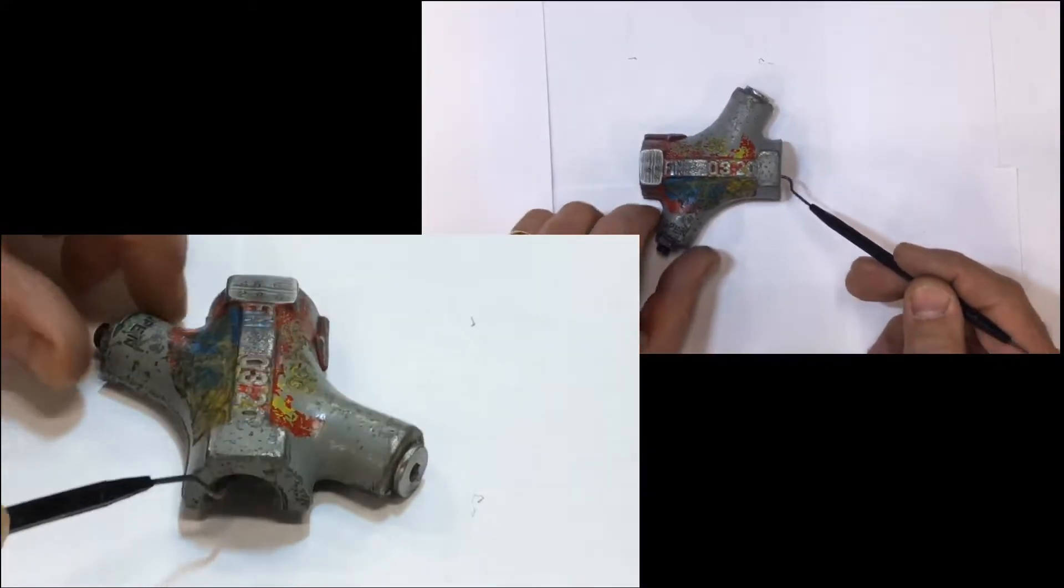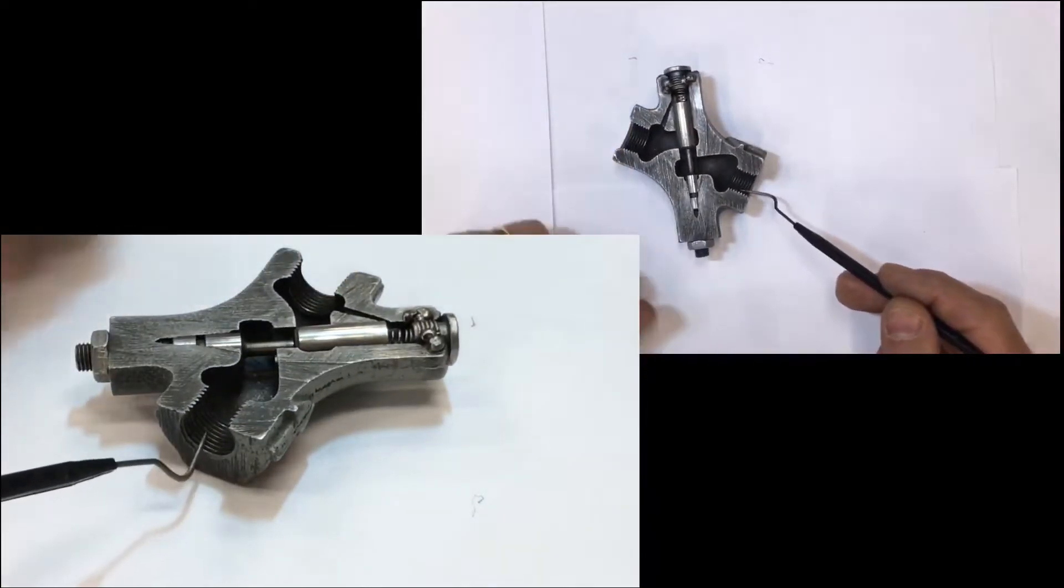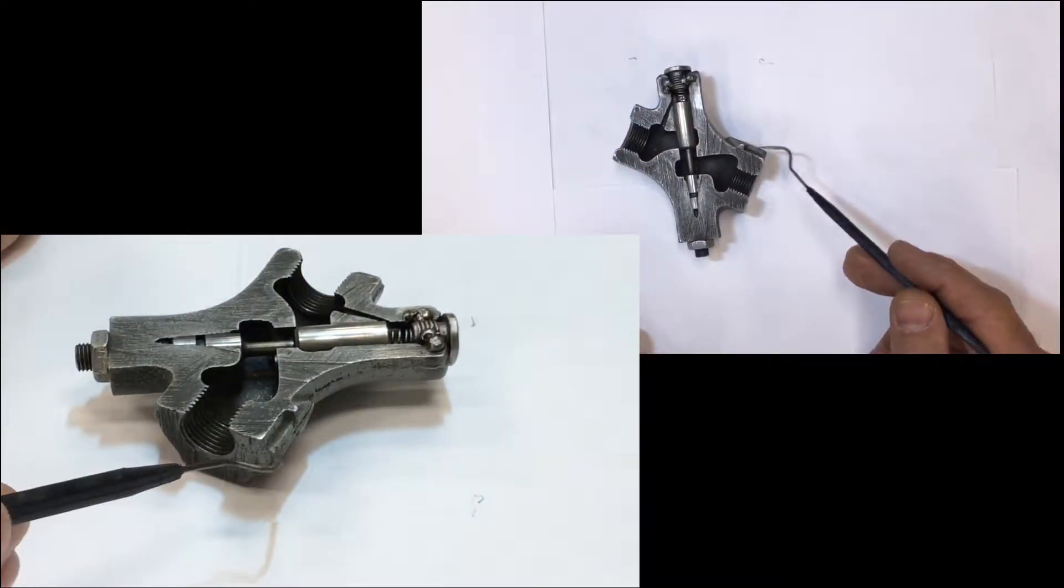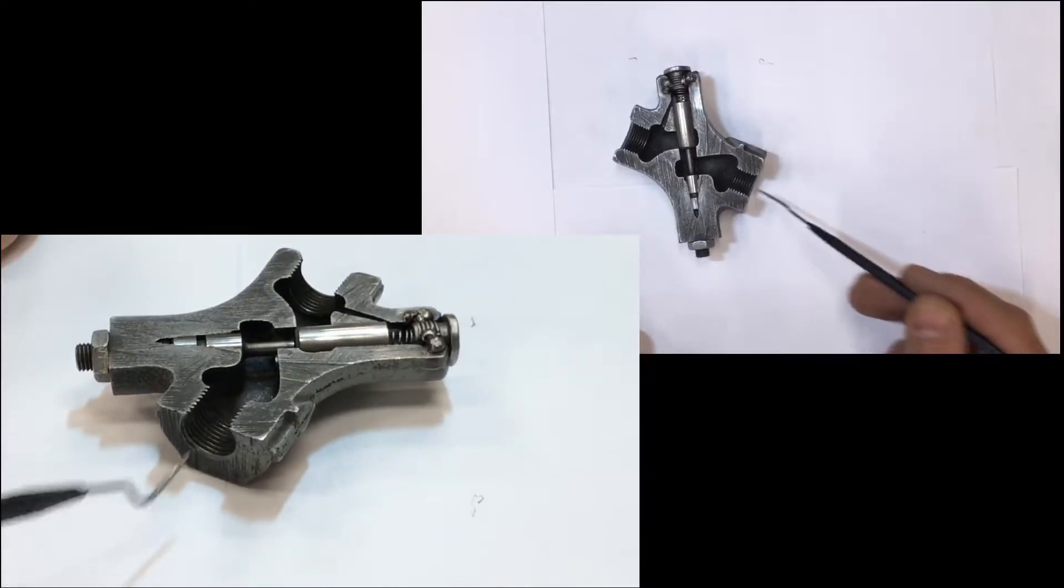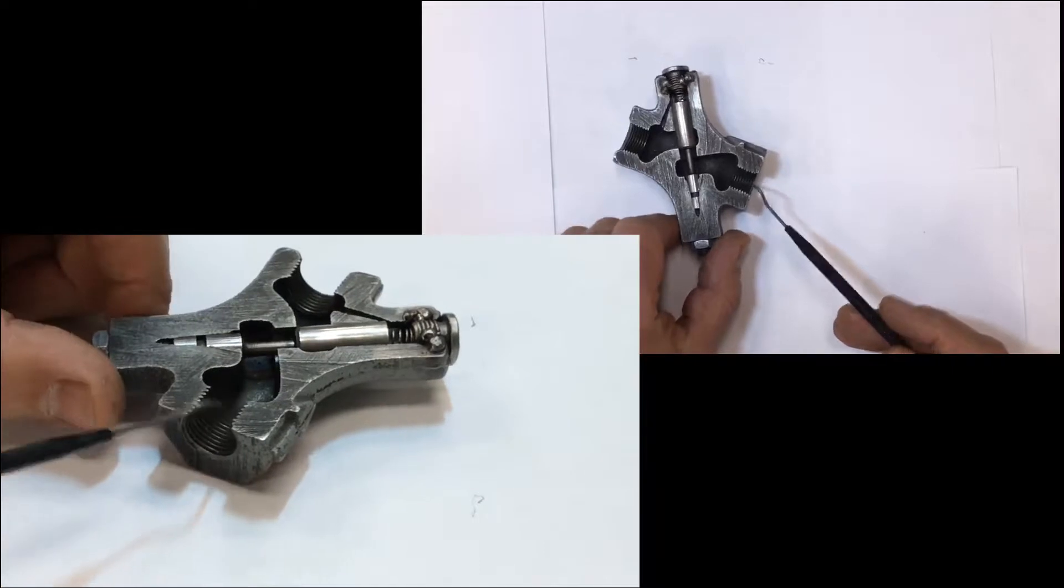When I flip it over, you'll notice that the arrow right there is indicating the direction that the oil would flow through this orifice in a free flow, unrestricted.